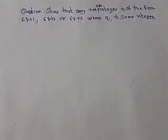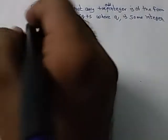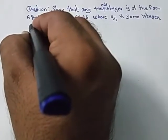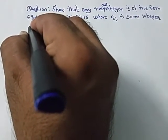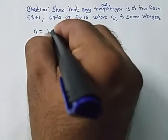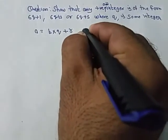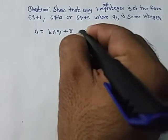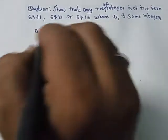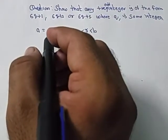EDL has several applications related to finding properties of numbers. We will give some examples of this application. By the rule of EDL, the equation is a equals b multiplied by q plus r, where r is greater than or equal to zero but less than b. We are now applying this formula to the equation.